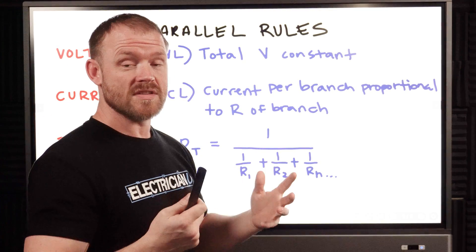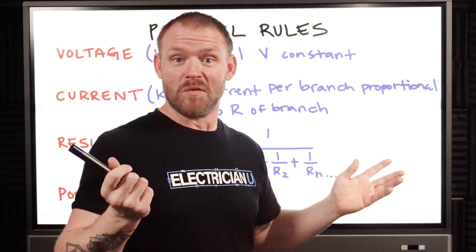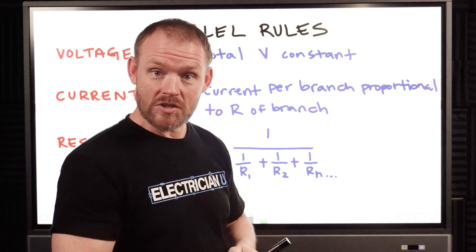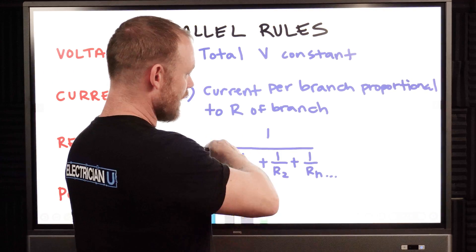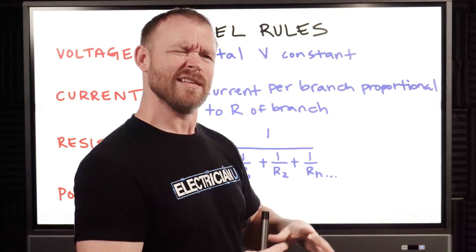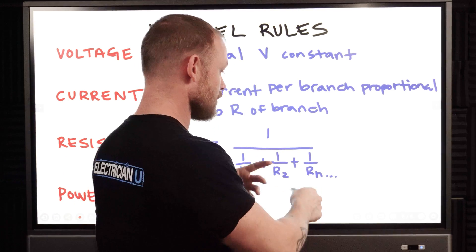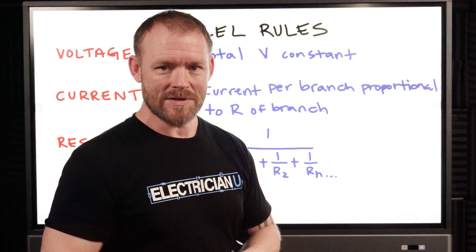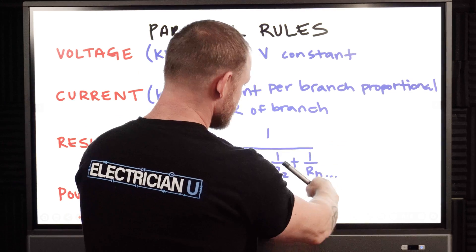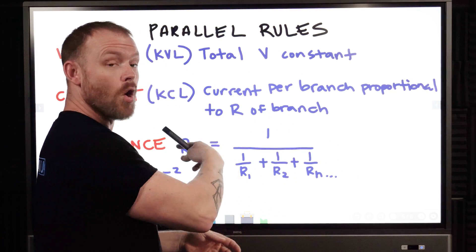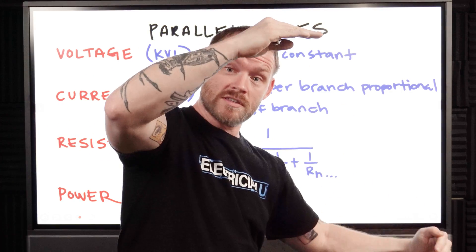The formula for total resistance in a parallel circuit is the inverse sum of inverses rule. We take the inverse of each resistor value — for example, two ohms becomes one-half — add all those inverses together, and then take the inverse of that sum. The formula is: 1 over (1/R1 + 1/R2 + 1/Rn), where Rn accounts for however many resistors you have. Because of the inverses of inverses, the total resistance ends up smaller than any single resistor.